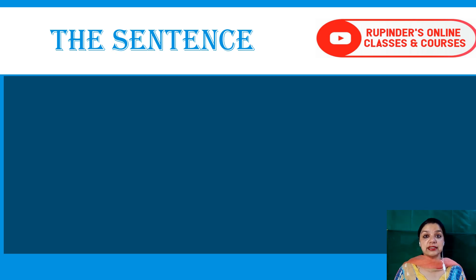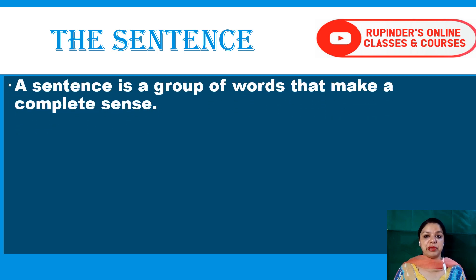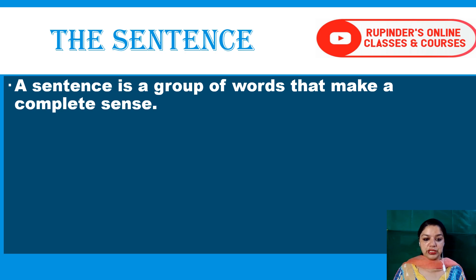First of all, what is a sentence? A sentence is a group of words that makes a complete sense. Now, what is the grammatical point here? If we are talking of just one thing, we are going to use S or ES with the verb. So the S is needed — a sentence is a group of words that makes a complete sense.